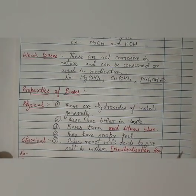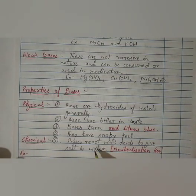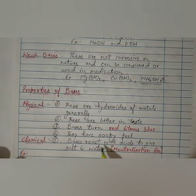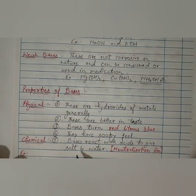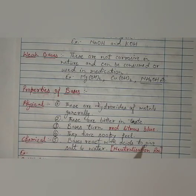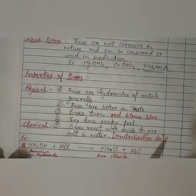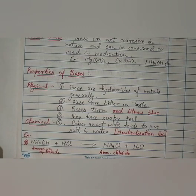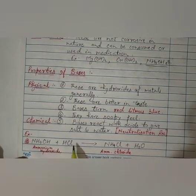Now we talk about the chemical property. The very important property, already we have studied that bases react with acids to give salt and water, and this is also known as neutralization reaction. One example we will discuss here. That is NH4OH plus HCl, that is ammonium hydroxide plus HCl.